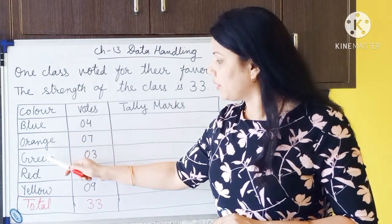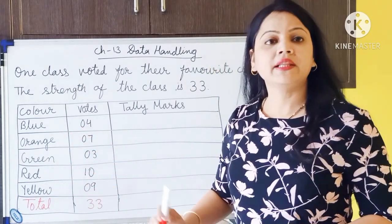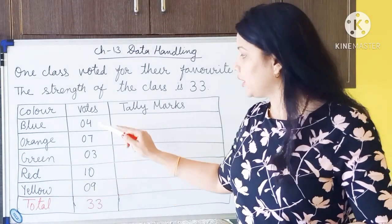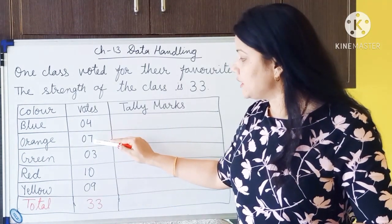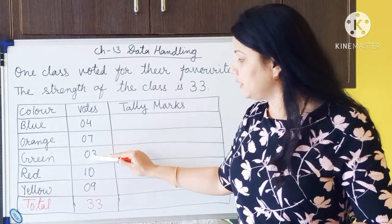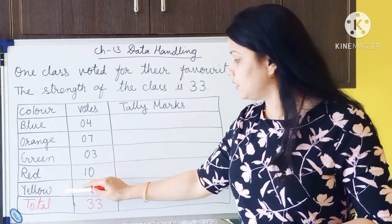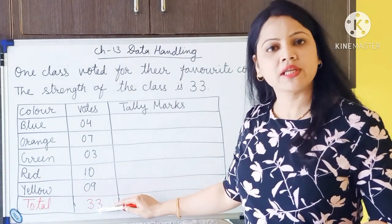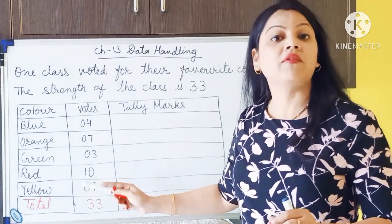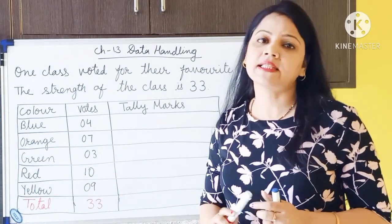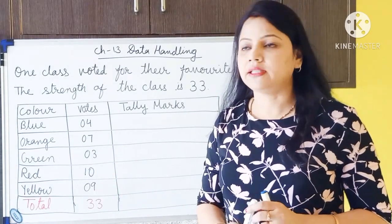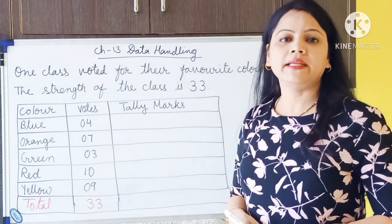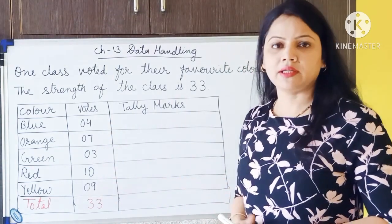Here I have written the different color names: blue, orange, green, red, yellow. And the total votes written in numbers: blue 4, orange 7, green 3, red 10, yellow 9. In total 33 votes, because the strength of the class is 33. Now we have to write the tally marks for these numbers.